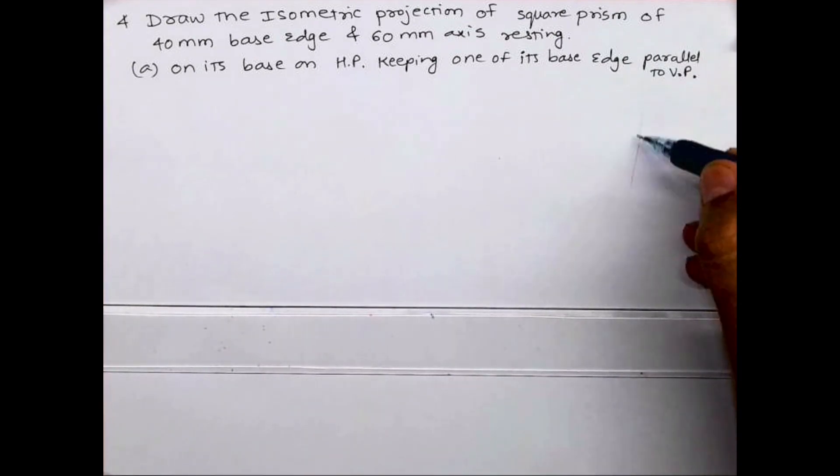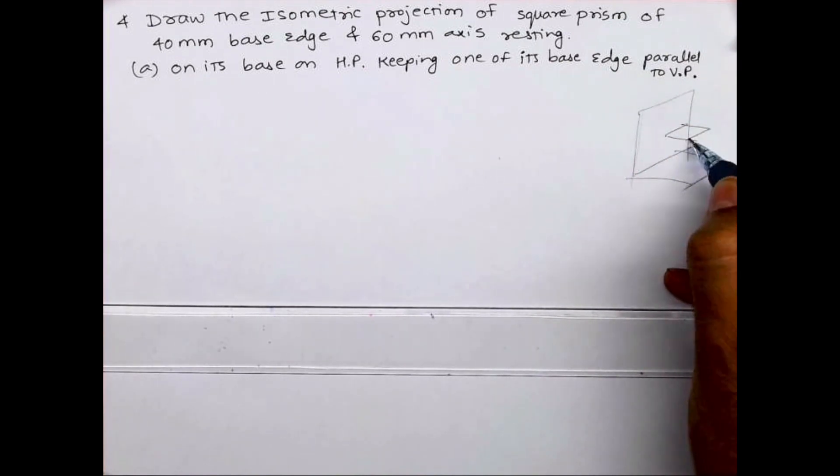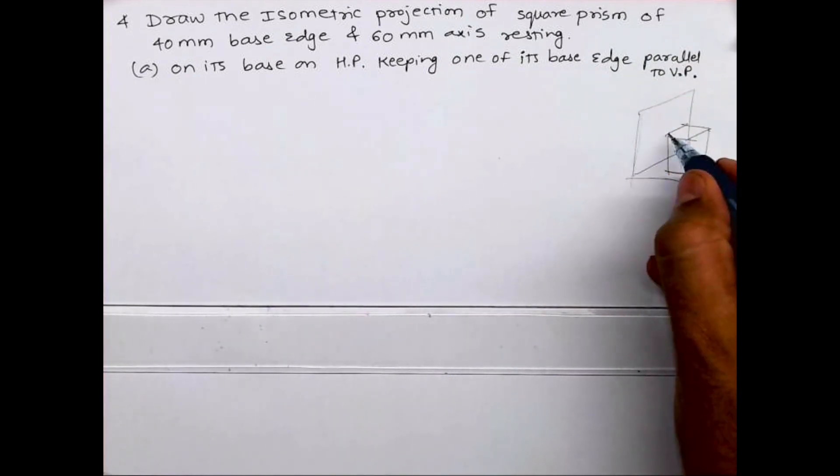See this. First we will draw HP and VP. This is the vertical plane, this is the horizontal plane. Now we have a square prism like this. It is resting on its base on HP with one of its base edges parallel to VP.